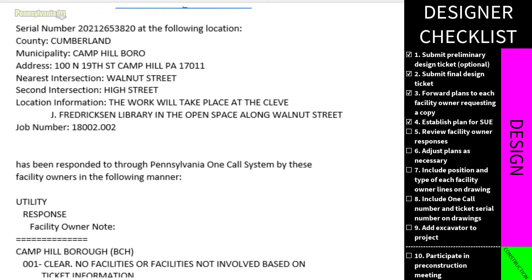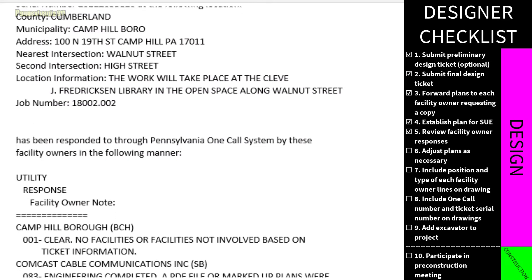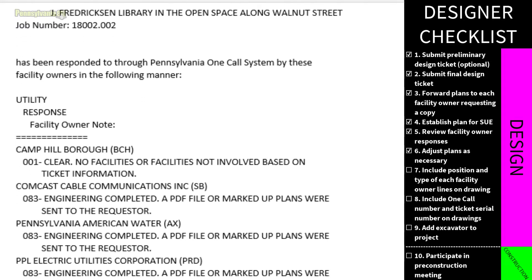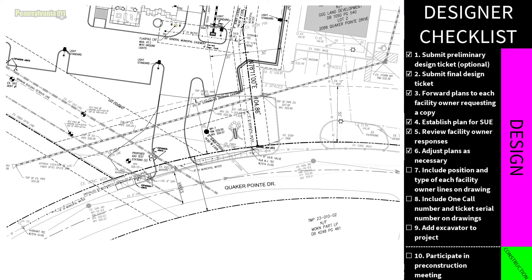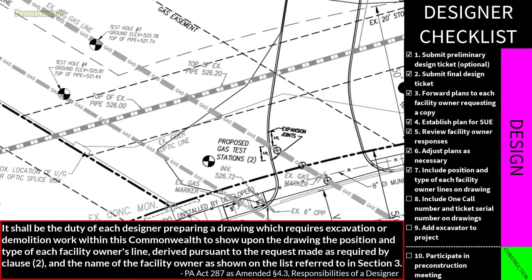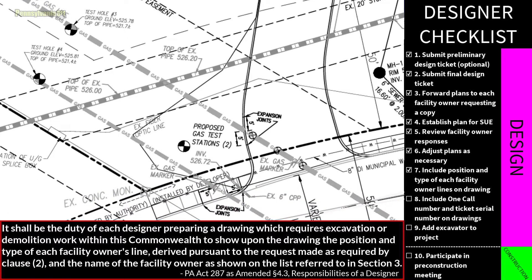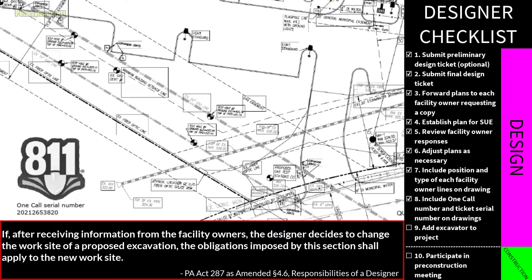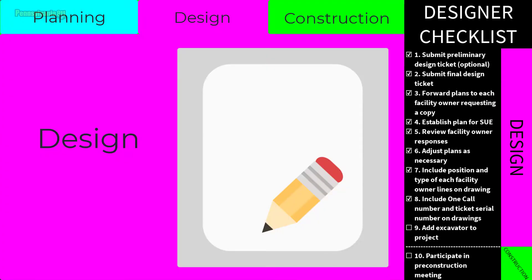The next step is to review responses from facility owners and make adjustments to the design to avoid unnecessary conflict. While creating the design, the designer is responsible to: show on the drawing the position and type of each facility owner's lines and the name of the facility owner; show the one call serial number and one call phone number on the drawing; and create a new design request if the scope or project site changes. That concludes the design phase.